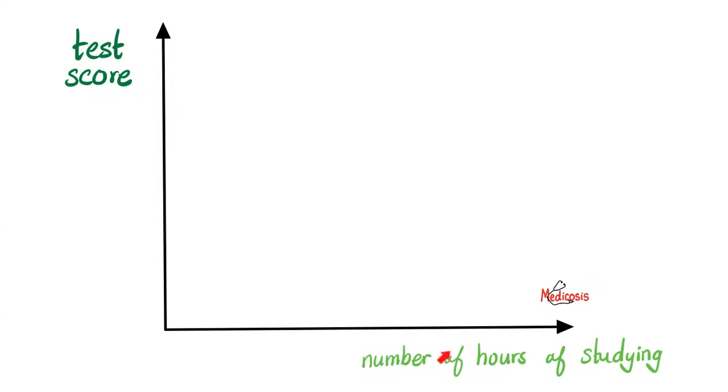So here is my independent variable, the number of hours of studying, and here's my dependent variable, which is the test score. And then we're gonna measure the effect of the number of hours studying on the test score. For example, let's say that we found out that the more hours you study, the higher your test score. So this is a positive correlation, because it's a positive slope. Positive slopes will look like this, whereas a negative slope will look like this. What does a positive slope mean? It means positive correlation. The more hours you study, the higher your test score.